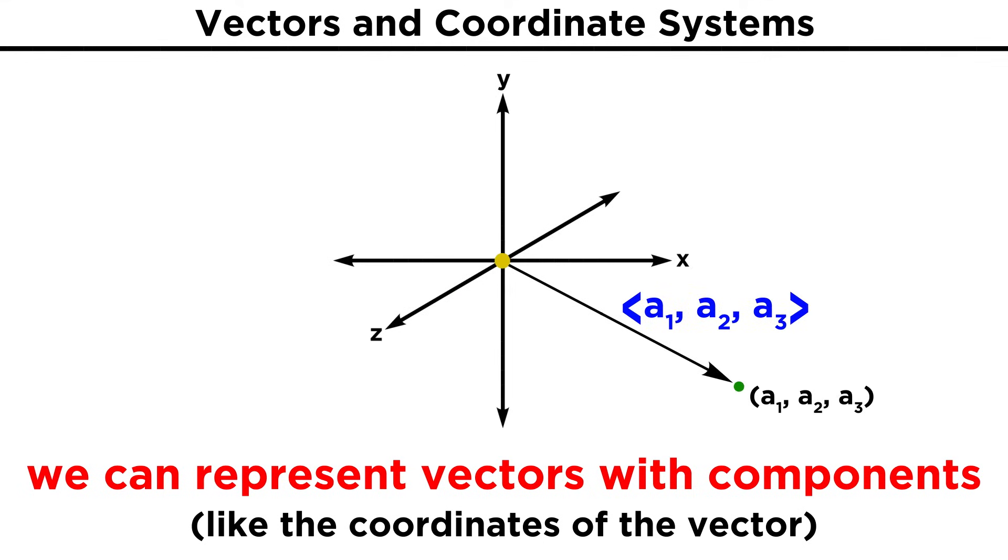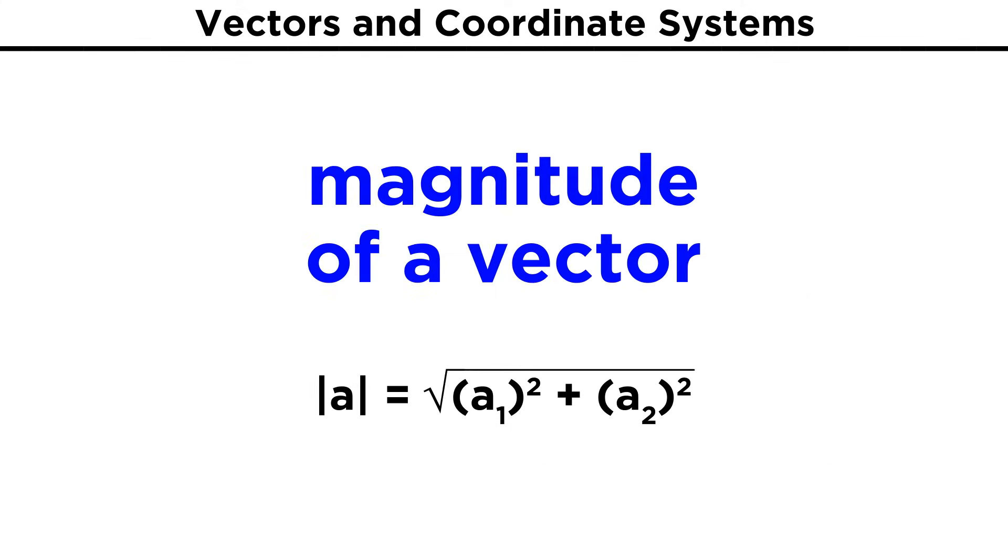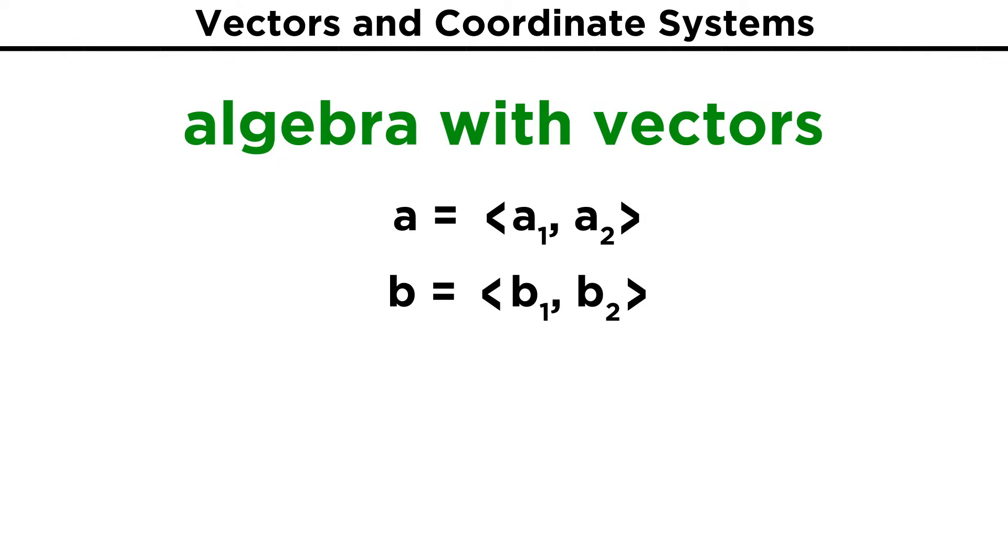This can be done in a three-dimensional coordinate system as well, with X, Y, and Z axes. The length or magnitude of a vector represented by these brackets here that look like absolute value brackets, can be calculated by finding the square root of the sum of the squares of its components. We can also use this information to do more algebra with vectors. If we have a vector A with components A1 and A2, and another vector B with components B1 and B2, the sum of these vectors, or A plus B, will have the components A1 plus B1 and A2 plus B2. The same can be said for vector subtraction, we just subtract the corresponding components.